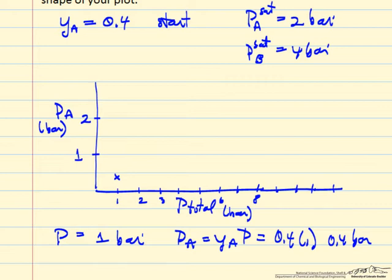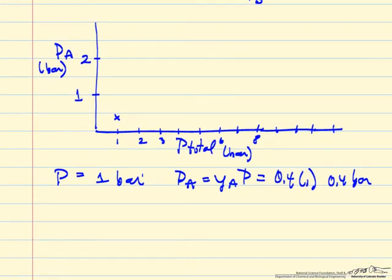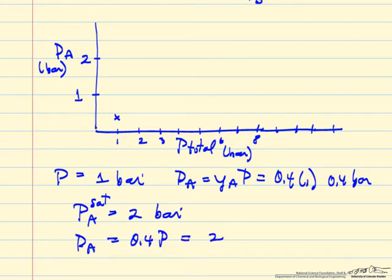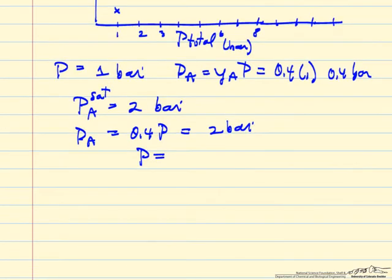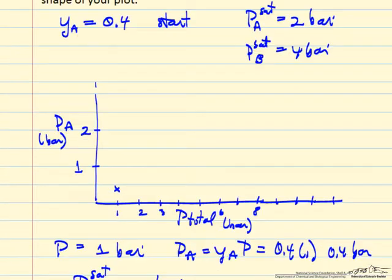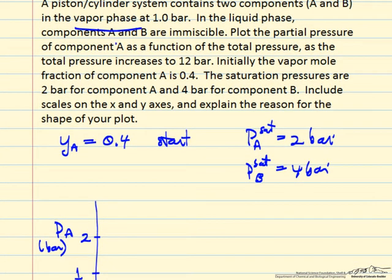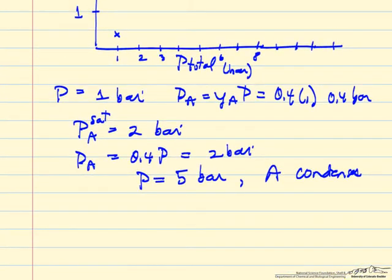Since the saturation pressure of A is much lower, we expect A to condense first. The saturation pressure of A is 2 bar, so when the partial pressure of A — which is 0.4 times the total pressure — equals 2 bar, we expect condensation. That means A starts condensing when the total pressure is 5 bar. The important thing to keep in mind is that components A and B are immiscible.